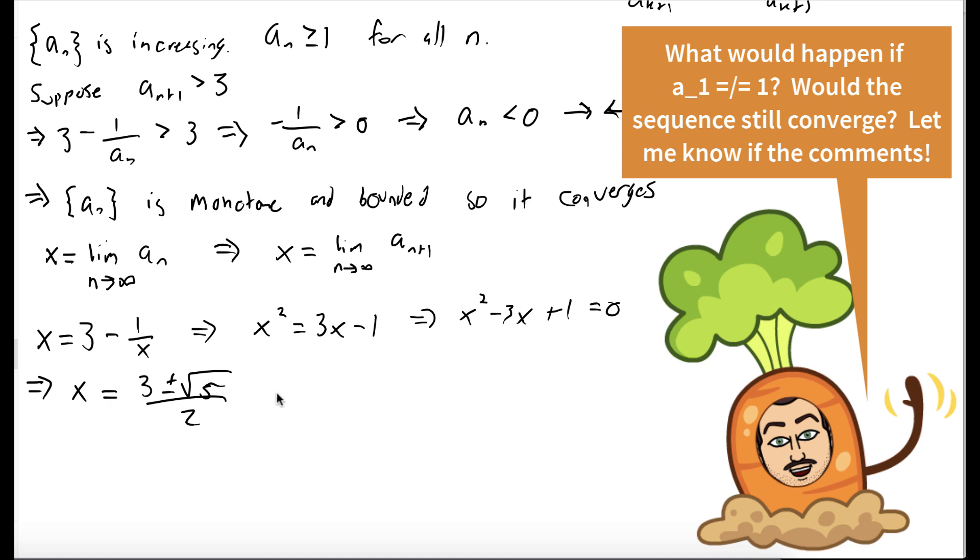But we're going to only take the plus term because we know our sequence is going to converge to something larger than 1. So x is equal to 3 plus square root of 5 over 2. Another way to say this is our sequence converges to 3 plus the square root of 5 over 2.